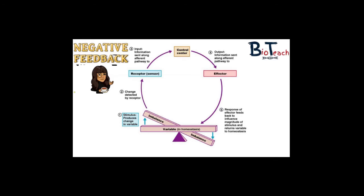Imagine the set point to be a bit like a seesaw. When the seesaw is balanced, we're in homeostasis, but various activities can lead our seesaw to go off balance, as shown in this diagram. And if that happens, our receptors, control centres, and effectors will create a response to bring about the balance again.